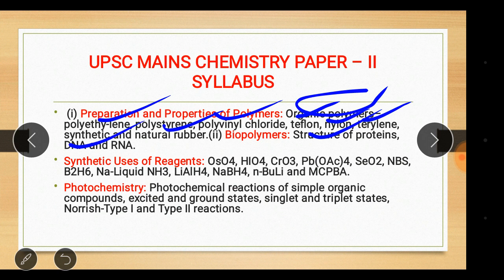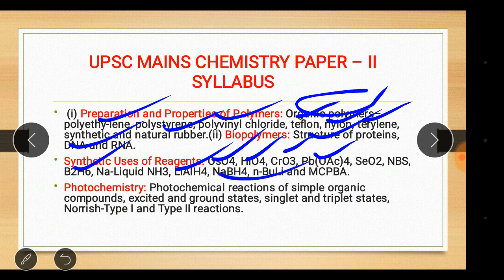Synthetic use of reagents — we need to focus on: osmium tetroxide, periodic acid, CrO₃, lead tetraacetate, CO₂, NBS, B₂H₆, sodium in liquid ammonia, lithium aluminium hydride, NaBH₄, n-butyllithium and MCPBA. Photochemistry: photochemical reactions of simple organic compounds, excited and ground states, singlet and triplet states, Norrish type 1 and Norrish type 2 reactions.